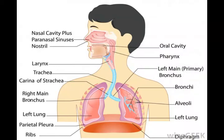The cranium is the upper bony structure of the skull, including everything except for the mandible, or jaw bone. The cranium protects the brain and head, and supports facial structures such as the eyes and ears, holding them in the proper place to receive sensory information most efficiently.